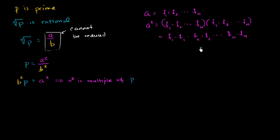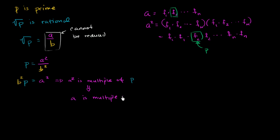Let's say that p is f2. If p is f2, then that means that p is also a factor of a. So this allows us to deduce that a is a multiple of p. Another way of saying that is that we can represent a as being some integer times p. Let me box this off because we're going to reuse this part later.